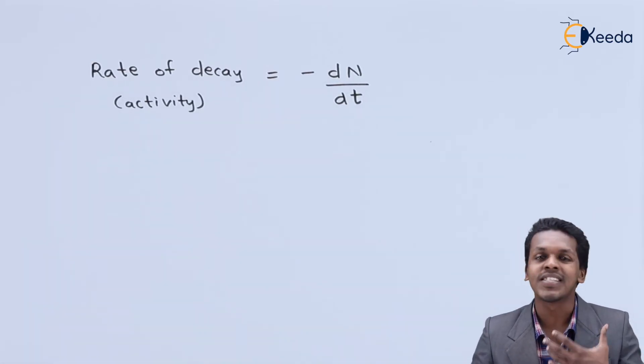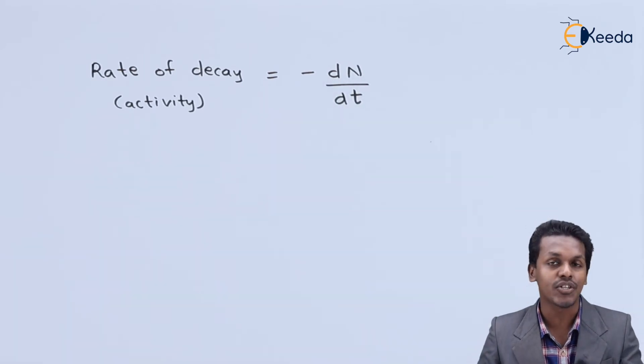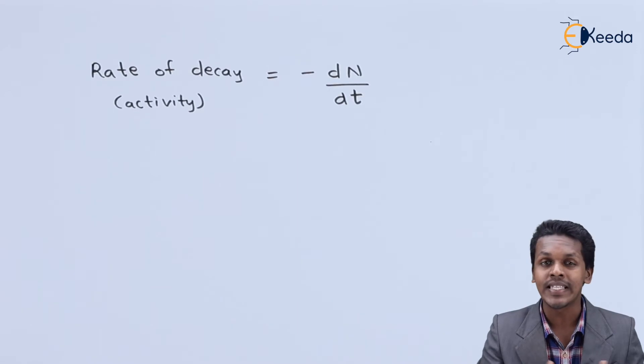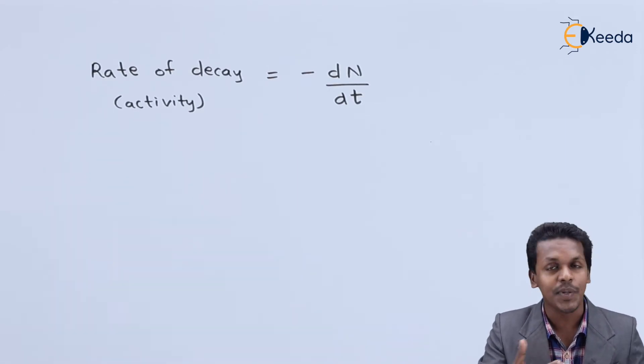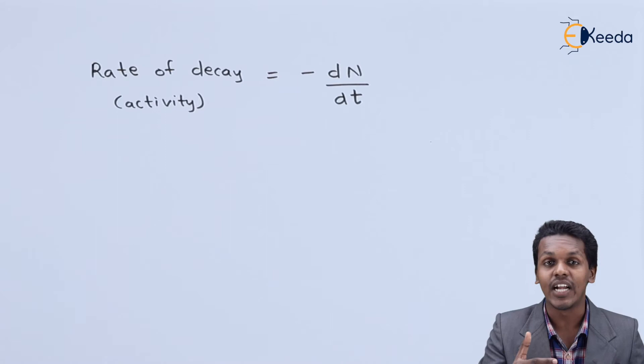The rate of decay is always a positive value. The dN, which is the disintegration of the nuclei, has a negative value because the disintegration of a particular element occurs with respect to time. The amount of nuclei will go on decreasing, but the rate will go on increasing with respect to time.